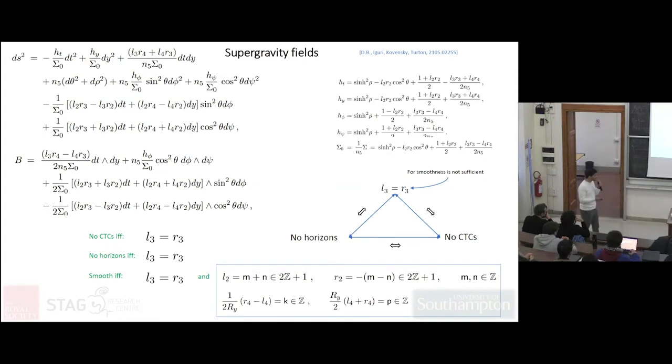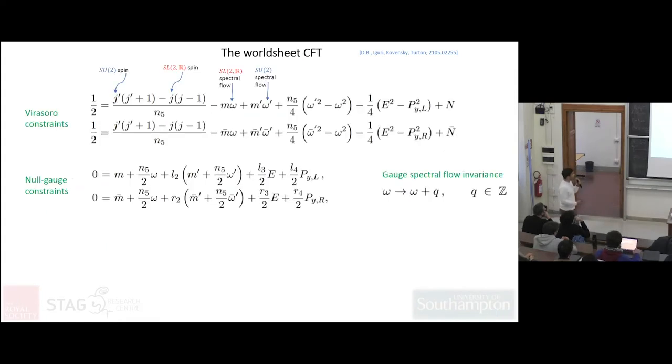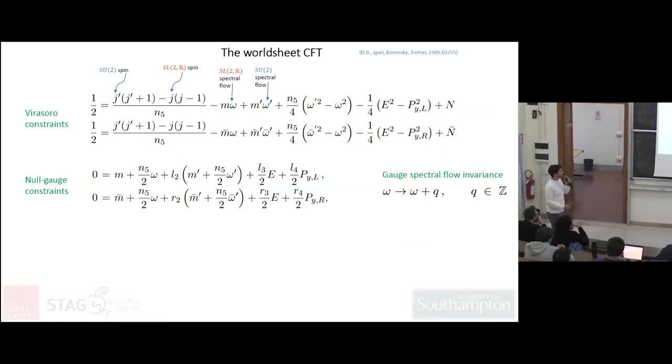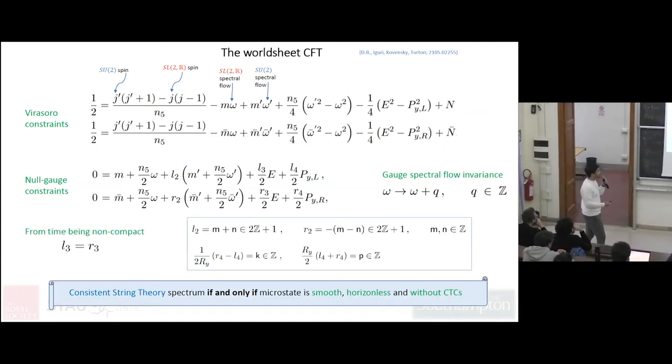This looks like something done by hand, because in supergravity you're moving by hand. But I'm going to argue that this is not the case from worldsheet string theory. If you look at what the worldsheet CFT does, if you look at the BRST constraint that comes out - the Virasoro constraint and all gauge constraints - if you look at this, you get the spectrum. The spectrum is consistent if and only if the corresponding geometry is smooth, does not have horizons, and is free of CTCs. So string theory, the consistency of string theory in these models, requires that the geometry is free of CTCs and is smooth.